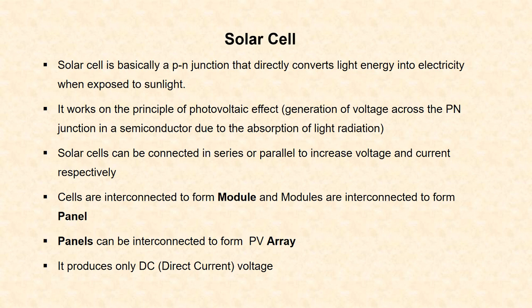The solar cells can be interconnected to form a module. The modules can again be interconnected to form a panel. The interconnection of panels is called a PV array. This increases current and voltage in the circuit. Solar cell produces only DC voltage. If we want AC voltage for any application, we can convert this DC voltage by using an inverter into AC voltage.